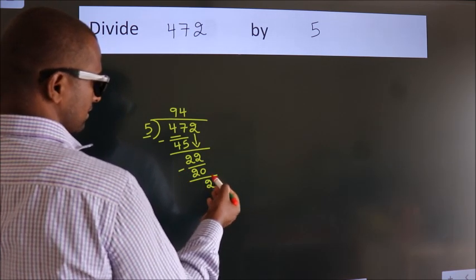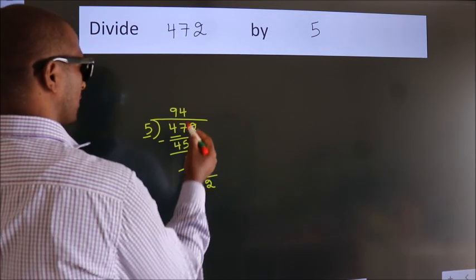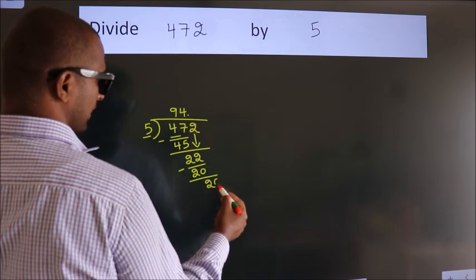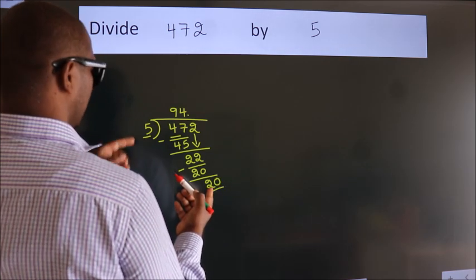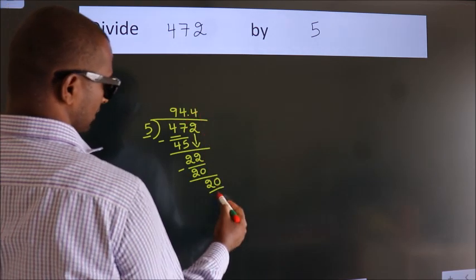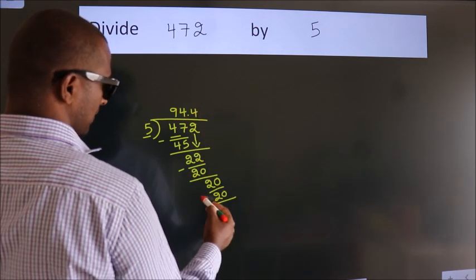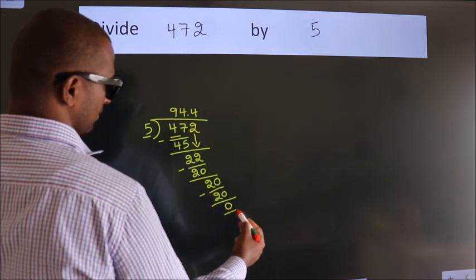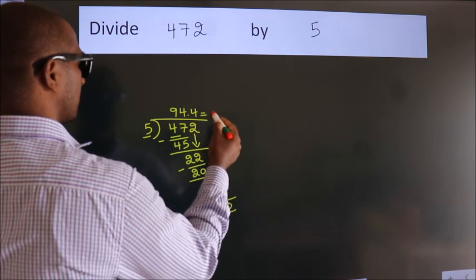After this, no more numbers to bring it down. So what we do is, we put dot take 0. So 20. When do we get 20? In 5 table. 5 fourths 20. Now we subtract. We get 0. We got remainder 0. So this is our quotient.